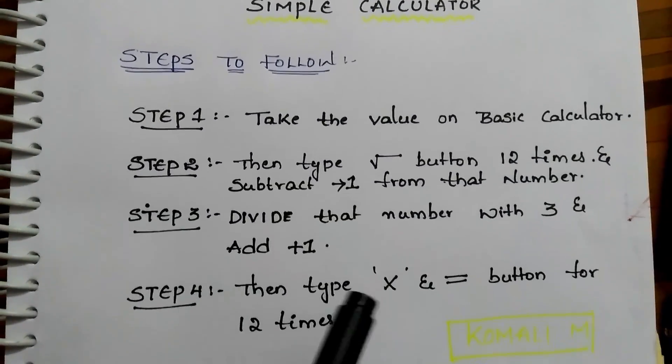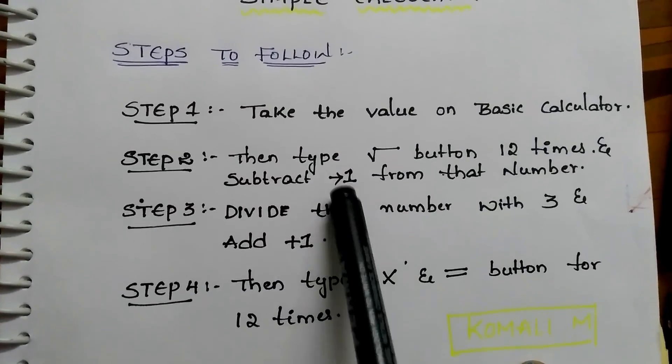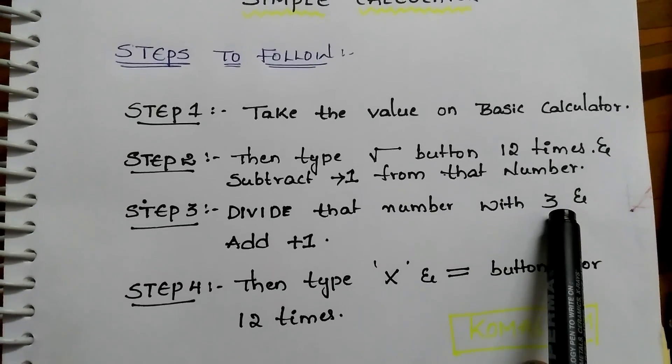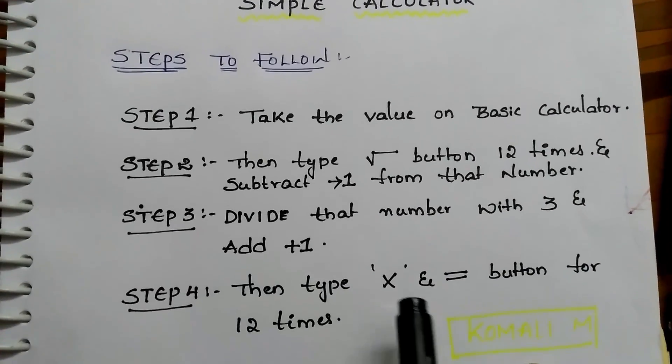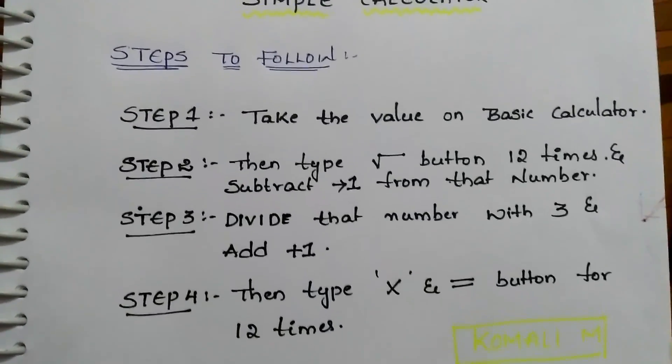Suppose you want to find the fourth root, take that value, press square root button for 12 times, subtract 1 from that number, and divide that number with 4 and add 1. Finally press multiply and equal to button for 12 times.